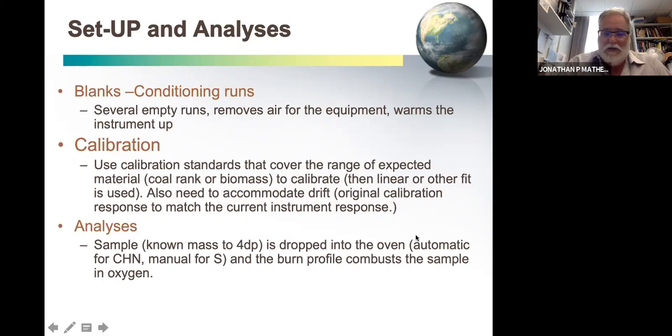Sample again, minus 60 mesh. You may dry it prior to or you may not, but you need to know what that moisture value is. You need to know what the ash yield is or the mineral matter value. We know the sample mass to four decimal places and it goes through the burn profile for the combustion.